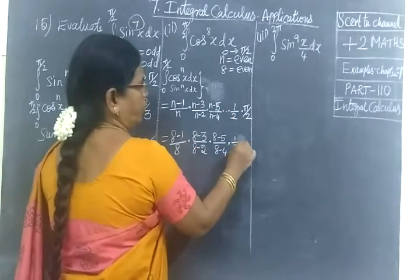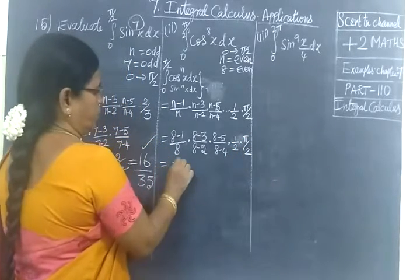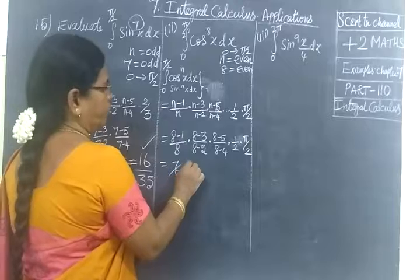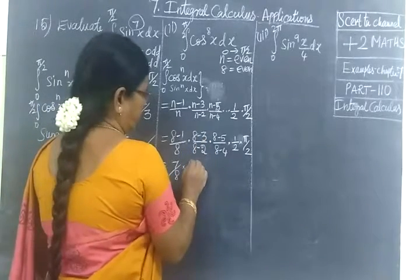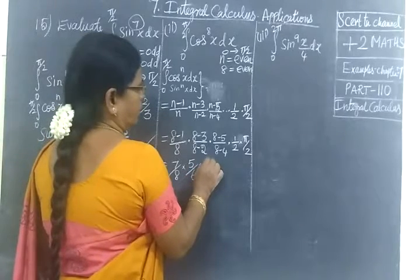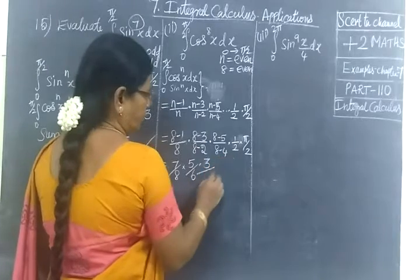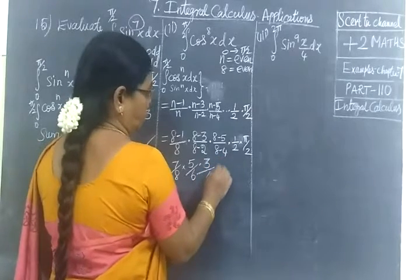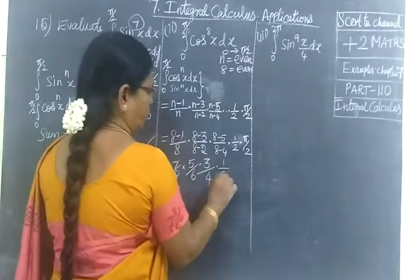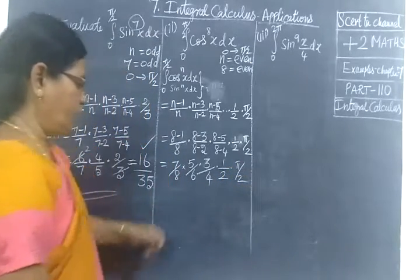So 1/2 is 1/2, 1/2 into π/2. Equal to 7/8, then 8-3 is 5/6. Then 8-5 is 3/8-4 which is 4, into 1/2 into π/2.